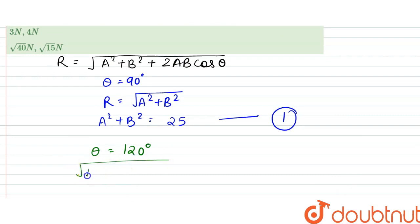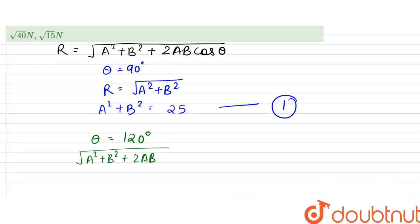So root of A squared plus B squared plus 2AB cos of 120 degrees. It is equal to minus half.